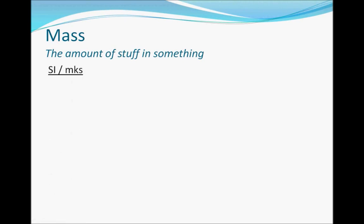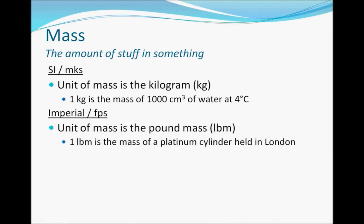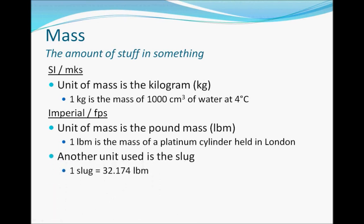The SI unit for mass is the kilogram, which is also the mass of a thousand cubic centimeters of water at four degrees Celsius. The Imperial unit is the pound or pound mass. Another unit you might see in the Imperial system for mass is the slug, which isn't used very often. One slug is equal to 32.174 pounds mass. And one kilogram is equal to approximately 2.2 pounds mass.